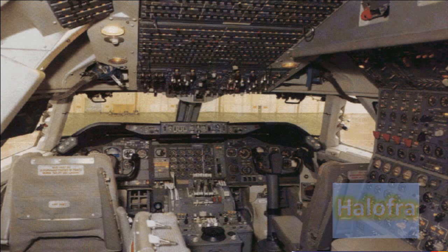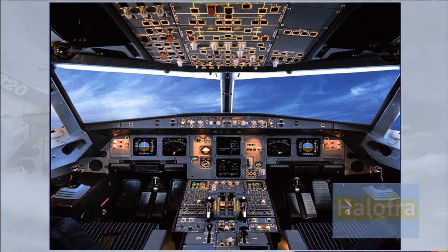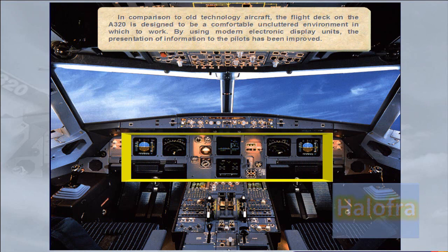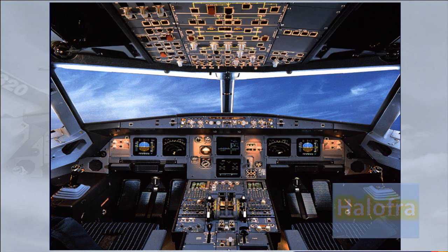In comparison to old technology aircraft, the flight deck on the A320 is designed to be a comfortable, uncluttered environment in which to work. By using modern electronic display units, the presentation of information to the pilots has been improved. The electronic instrument system, EIS, consists of six identical full-color cathode ray tube display units.